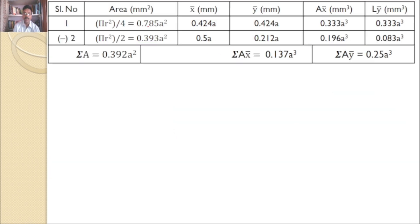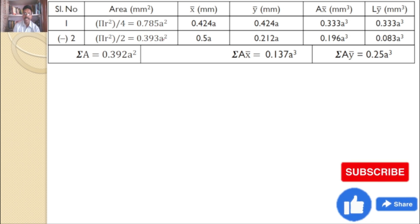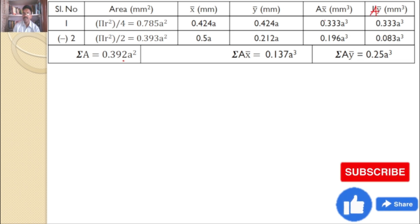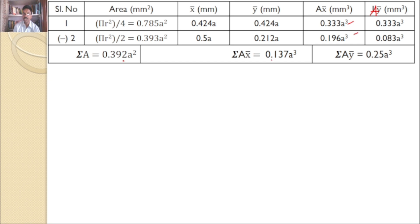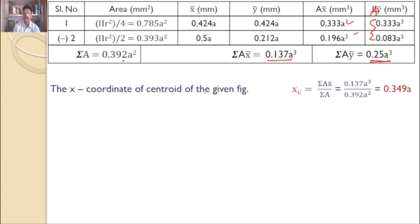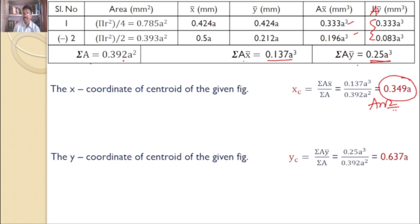Now I can calculate: sigma A equals 0.785 A² minus 0.393 A², which equals 0.392 A². Sigma A·X̄ gives 0.137 A³, and sigma A·Ȳ gives 0.25 A³. The X coordinate of the centroid is sigma A·X̄ by sigma A, which gives 0.349 A. The Y coordinate of the centroid is sigma A·Ȳ by sigma A, which gives 0.637 A.